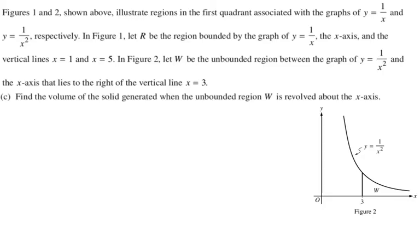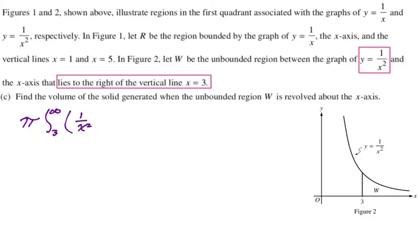All right, moving on. Now find the volume of the solid generated when region W is revolved about the x-axis. So W is figure two, it's the unbounded region between the graph of y equals one over x squared and the x-axis that lies to the right of the vertical line. So we're dealing with one over x squared, and we're just to the right of the line. So this is going to be an improper integral because our upper bound will be infinity. So let's set it up. So volume is pi the integral from three to infinity. And then we're just going to do like big R squared because there's no inner curve. So we get one over x squared squared.